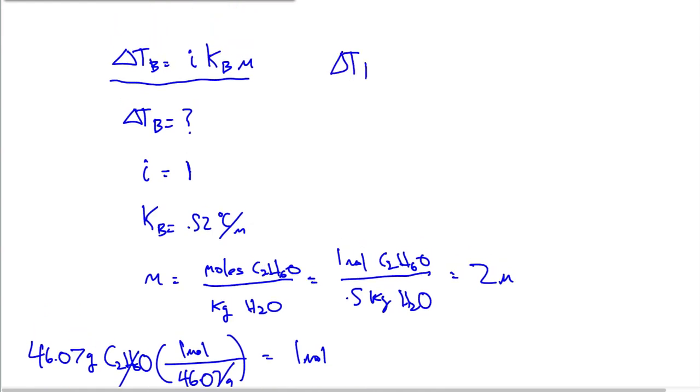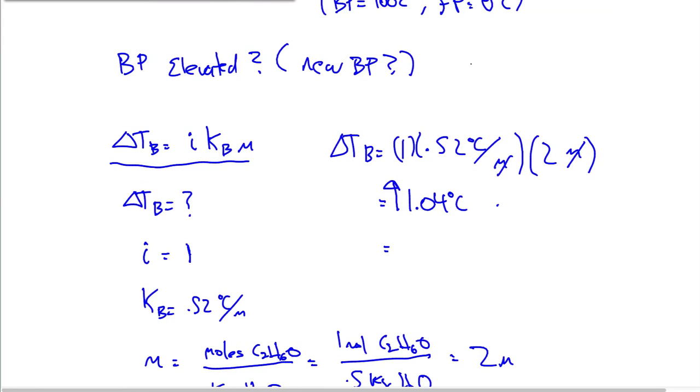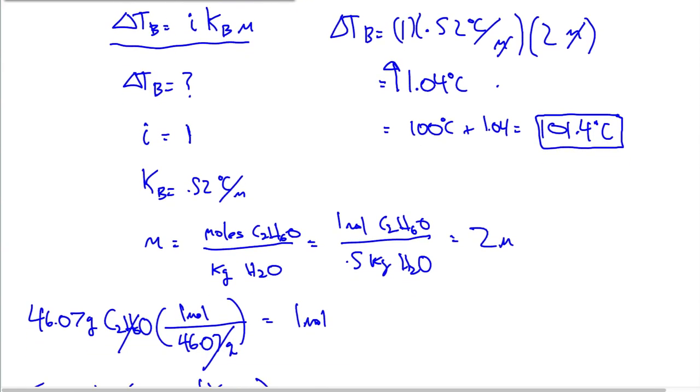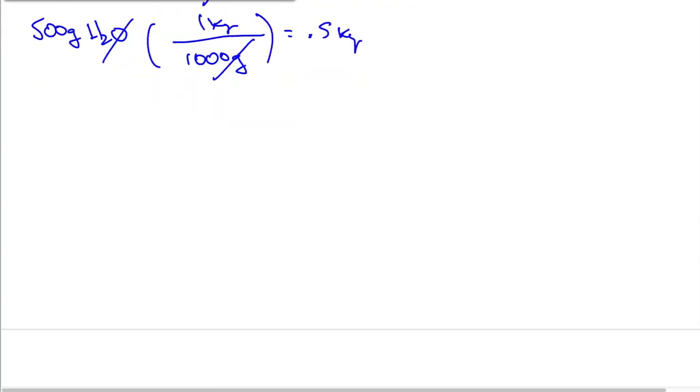So let's go through and solve it. So delta T_B equals 1, that's I, times 0.52 degrees Celsius per molality, multiplied by 2 molality. Look at how nicely these units cancel. And we're going to get a value of 1.04 degrees Celsius. So this is the amount elevated. This is how much it went up. It went up by 1.04 degrees Celsius. So the new boiling point is going to be 100 degrees Celsius plus 1.04, which is going to equal 101.04 degrees Celsius. The solute particles increase the boiling point by 1.04 degrees Celsius, thus creating a new boiling point of 101.04 degrees Celsius.